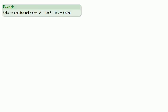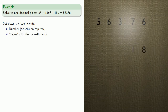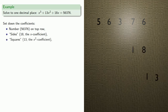To solve this cubic, first we'll set down the coefficients: the number on the top row; the sides, 18, the x coefficient, on the next row; the squares, 13, the x squared coefficient; and then the cubes, 1, the x cubed coefficient.